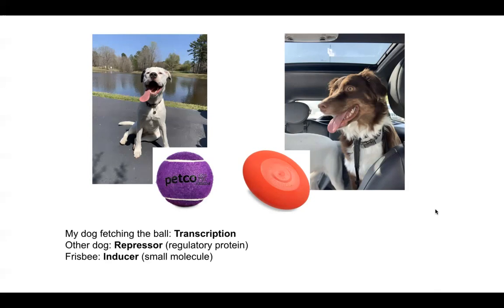So, my dog playing fetch would be the transcription that I am trying to get to. However, the other dog keeps getting in her way, making that dog the repressor. Thus, the Frisbee I found to throw to distract the other dog would be the inducer. This would make this just like what I learned about Grandpa. So, it would be negative-controlled, inducible regulation.